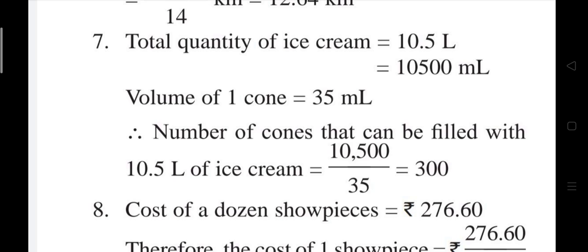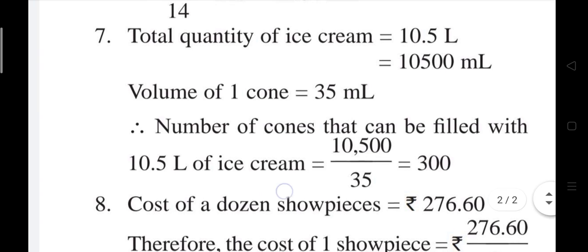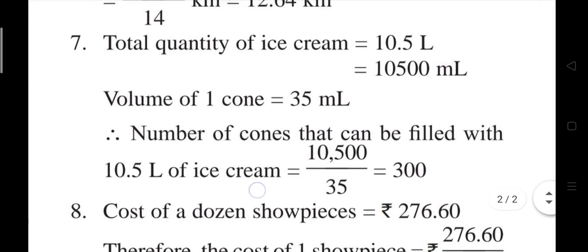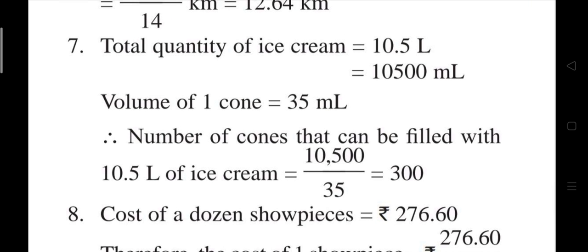The number of cones that can be filled with 10.5 liters of ice cream: put the total ice cream in the numerator (10,500 ml) and the amount for one cone in the denominator (35 ml). Dividing this, your answer will be 300 cones. If you fill 35 ml ice cream in one cone, you can make a total of 300 cones. This is your answer for the given question.